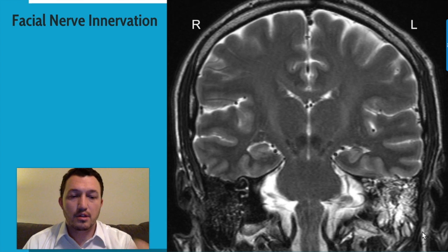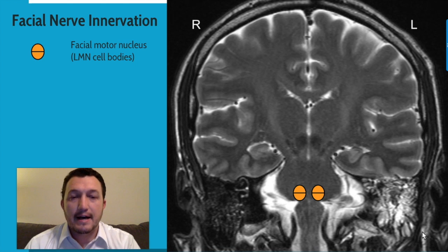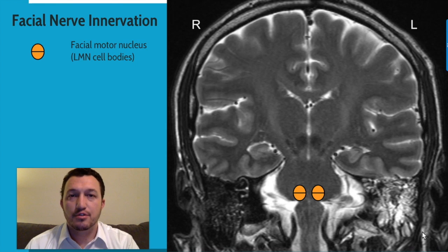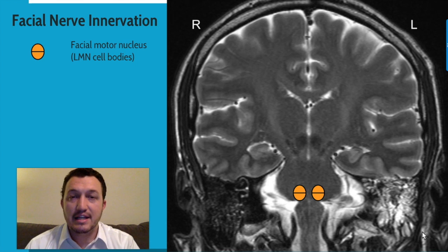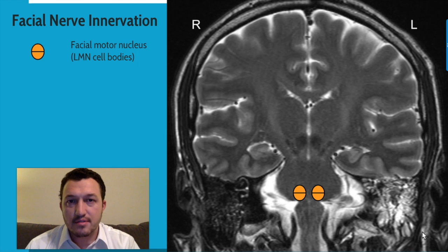Here in the lower part of the pons we have the facial motor nucleus. This is where the cell bodies of the lower motor neurons that supply innervation to the facial muscles reside. Coming off of the left motor nucleus of the facial nerve we have the left facial nerve that innervates the muscles of facial expression on the left face, and then the same thing on the right — we have the right facial nerve coming from the right facial motor nucleus. These are the lower motor neurons synapsing on the muscles of facial expression.